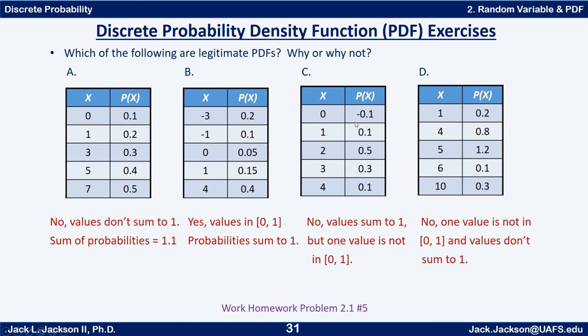In C, they do add up to one, but one of the values is not in the interval [0,1], this negative one. And both conditions fail on the last one. They don't add up to one, and one of the values is not in [0,1]. So there's an introduction to the probability density function, or PDF.